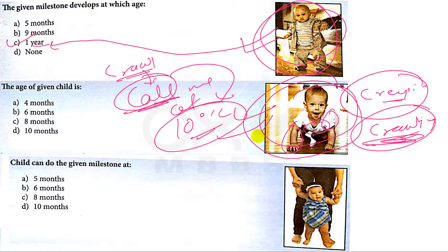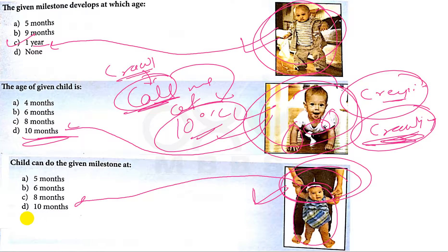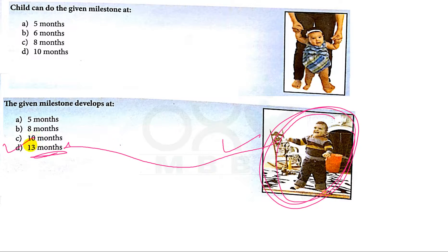Crawling is achieved at around 10 months of age. And in this picture, you can see the baby is walking with support, so walking with support is also achieved at around 10 months of age — D is the correct answer. Now in this picture, the baby is walking without any support, which is achieved at around 13 months of age. So D is the correct answer.